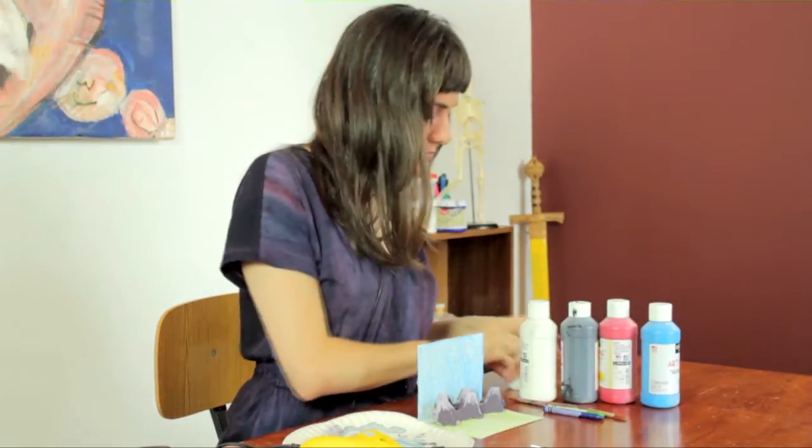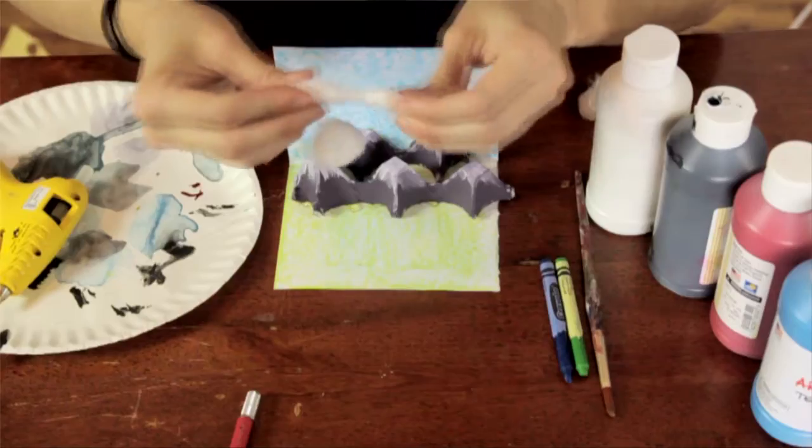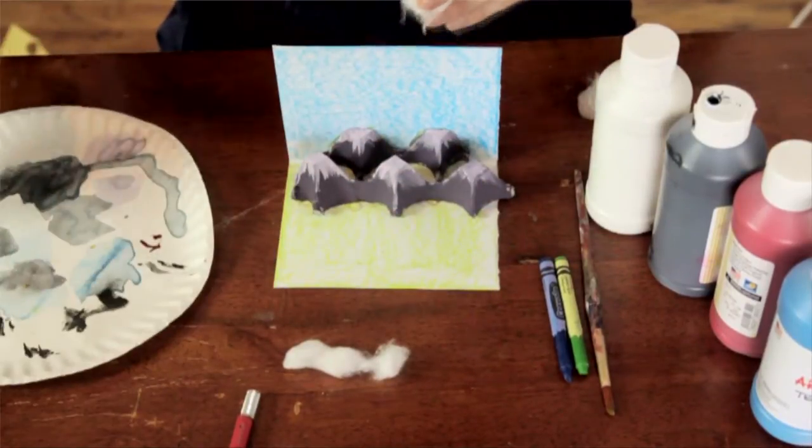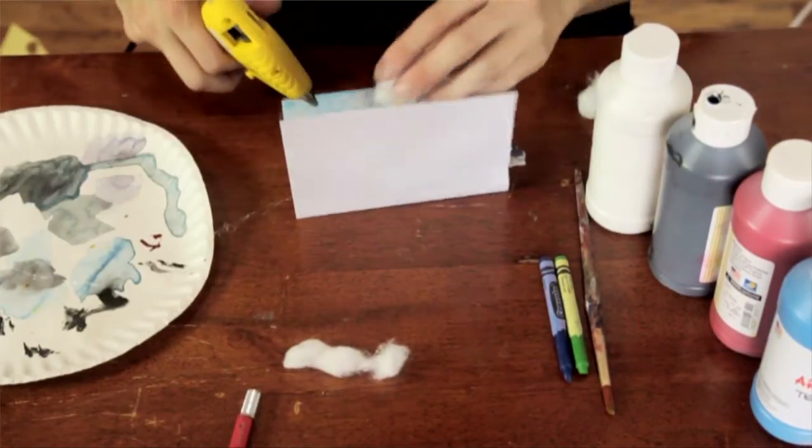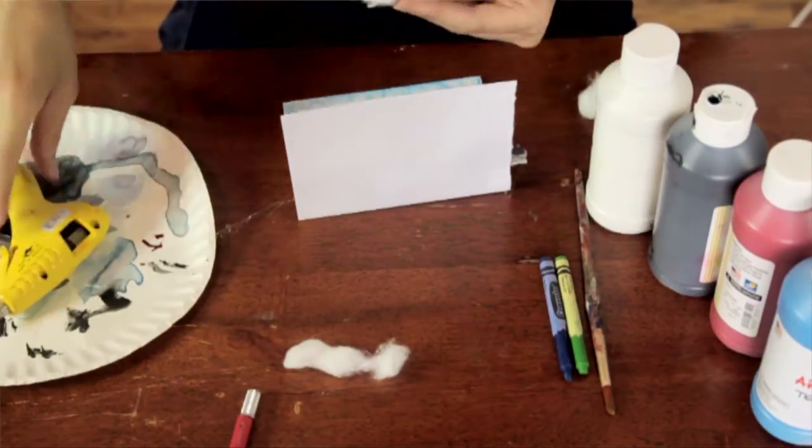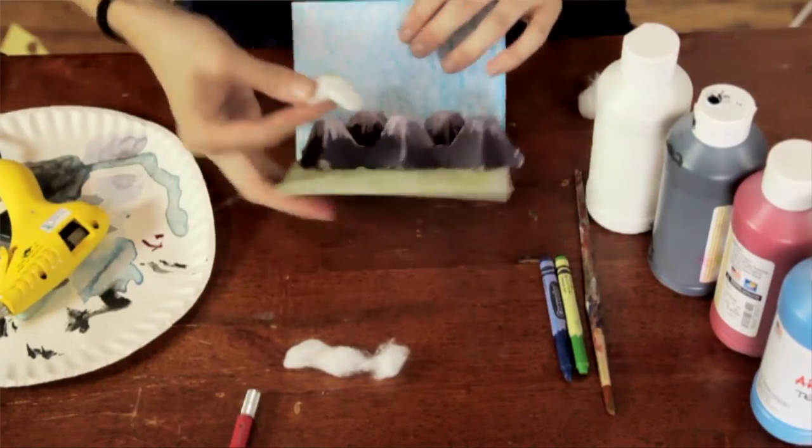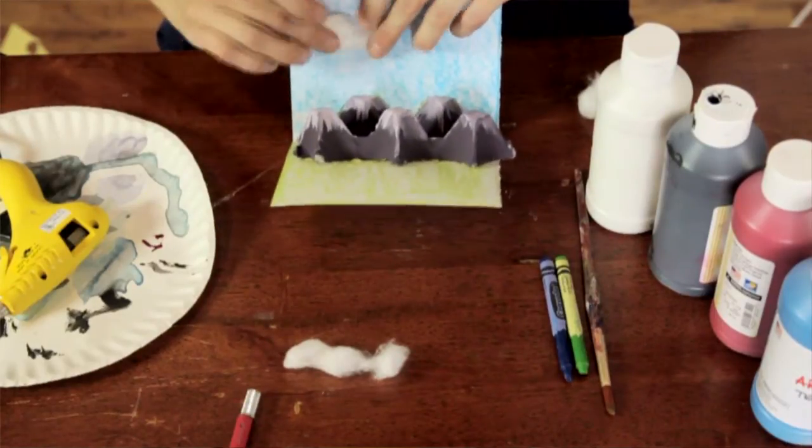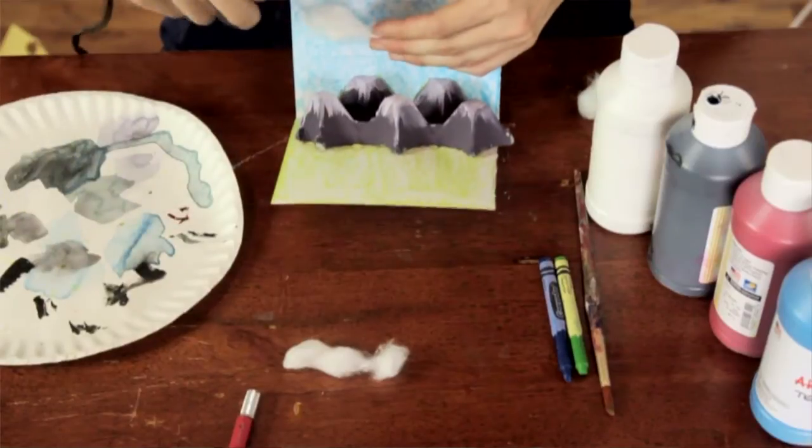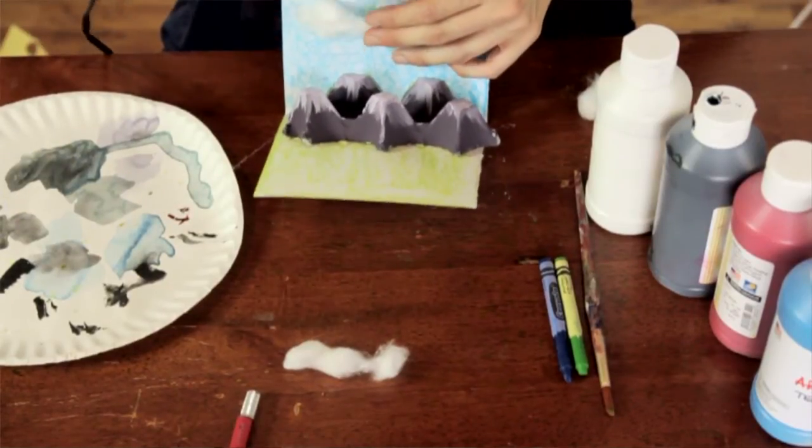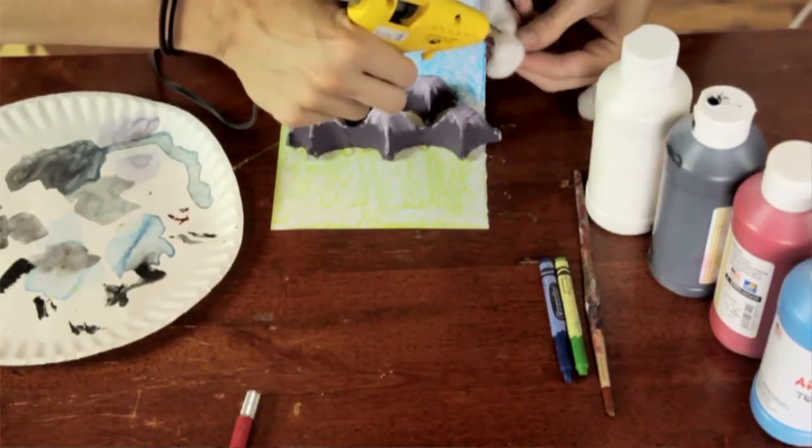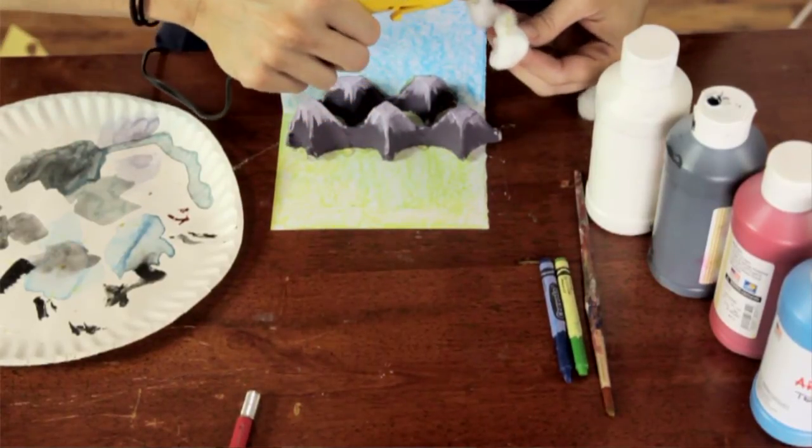Then for our final step, take those cotton balls and pull them apart a little bit to make them cloud-like, and just a little bit of glue should do it. Stretch that across the sky and give it two clouds.